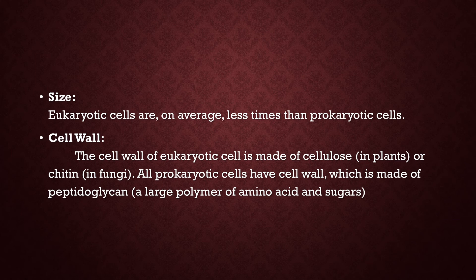The prokaryotic cell wall is made up of peptidoglycan. This is an MCQ point: prokaryote cell walls are made up of peptidoglycan. Peptidoglycan is a large polymer of amino acids and sugar.